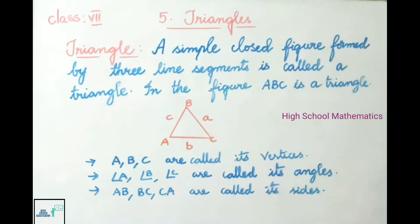A, B, C are called its vertices. Angle A, angle B, and angle C are called its angles, and AB, BC, and CA are called its sides.